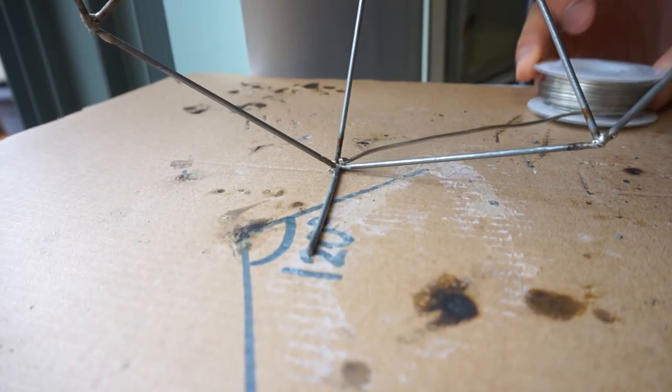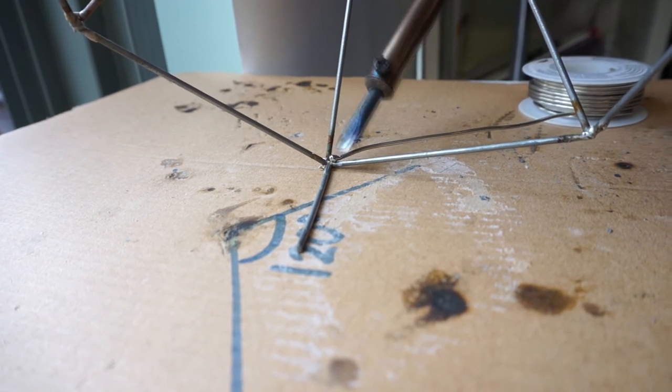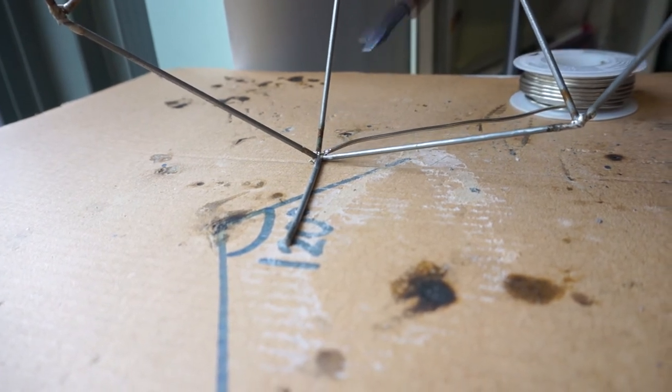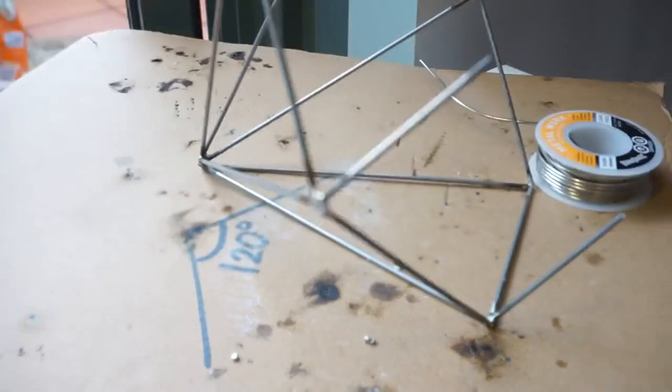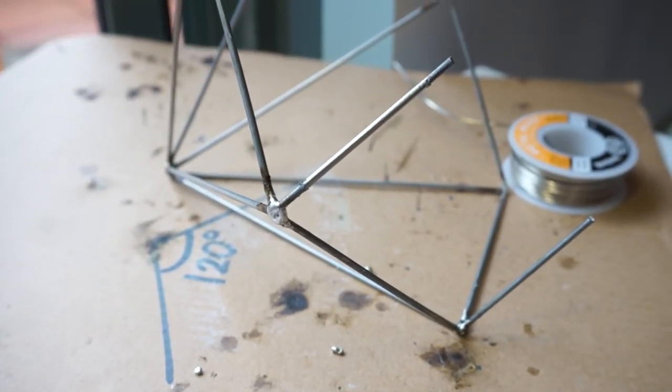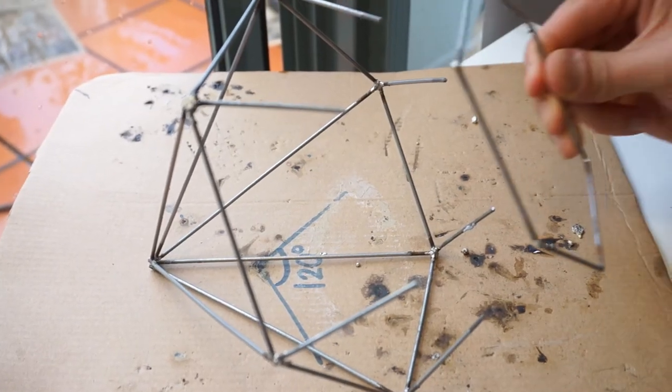The next part was the most difficult part for me. I took a 5.5cm wire and soldered it perpendicular to the 15cm wire. I did the same with the remaining 5.5cm wires. And you want to solder it so that you can place your 6cm hexagon on top.